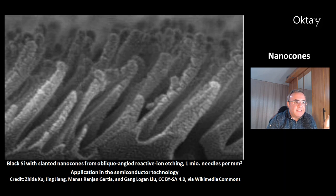This is another picture of black silicon with slanted nanocones from oblique angled reactive ion etching. You can place up to 1 million needles per square millimeter. These nanocones have potential applications in semiconductor technology.